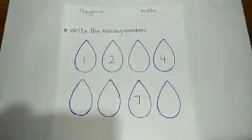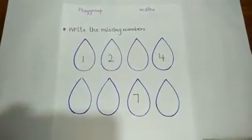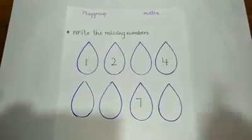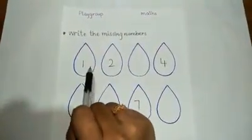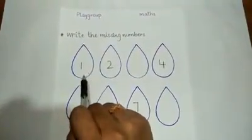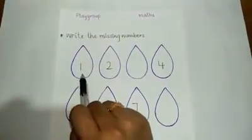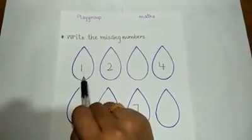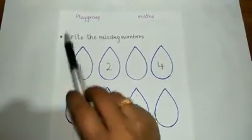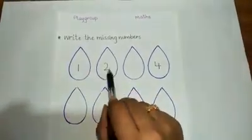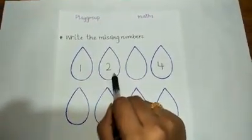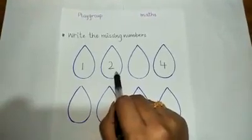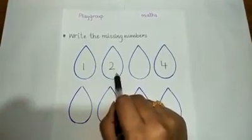What we are going to learn — we are going to learn about the missing numbers. Which number is this, kids? One. Which number is this, kids? One. What comes after one? It's two. Which number is this? It's two.